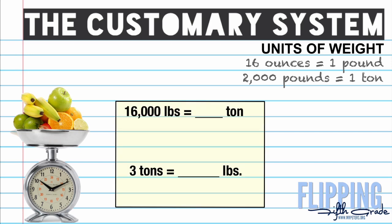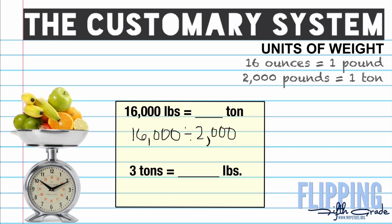Now we're going to do some conversions. When converting from pounds to tons you're converting a smaller unit into a larger unit, so we're going to use division. We know there are 2,000 pounds in a ton, so we take 16,000 divided by 2,000. You can cancel matching zeros to get 16 divided by 2, which is 8. So 16,000 pounds equals 8 tons.